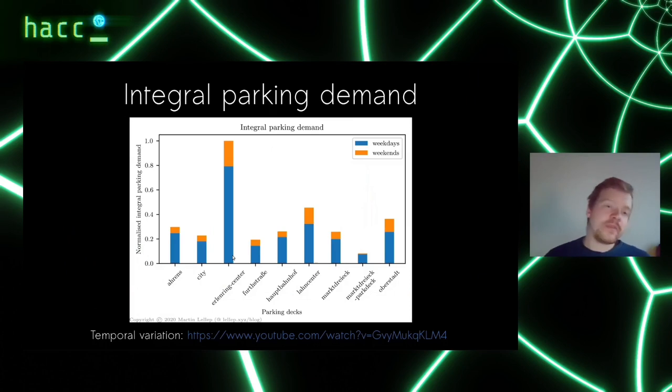From this, we can quantify the integral parking demand, simply the number of parking spots provided per parking deck. The picture here is normalized to the maximum and one can see very easily that the Erlenring Center, as we estimated previously, is the one dominating the whole city, providing the most parking spots by a large margin. The next one is the Lahncenter, then maybe the Oberstadt.